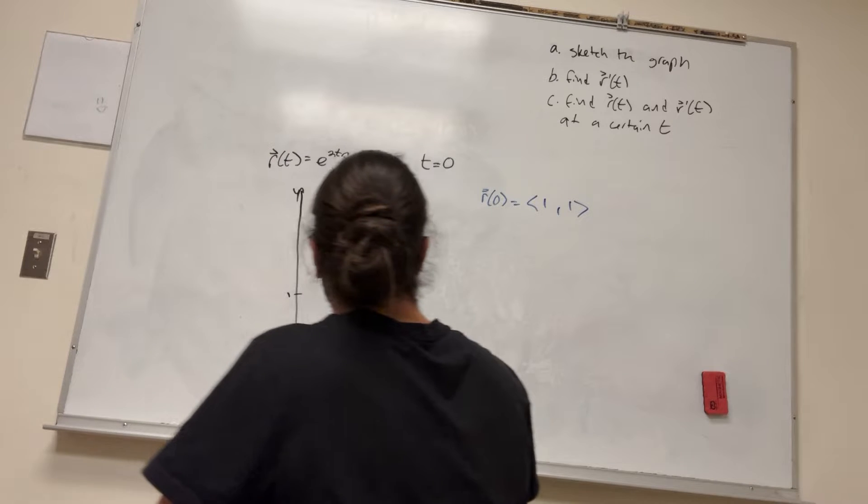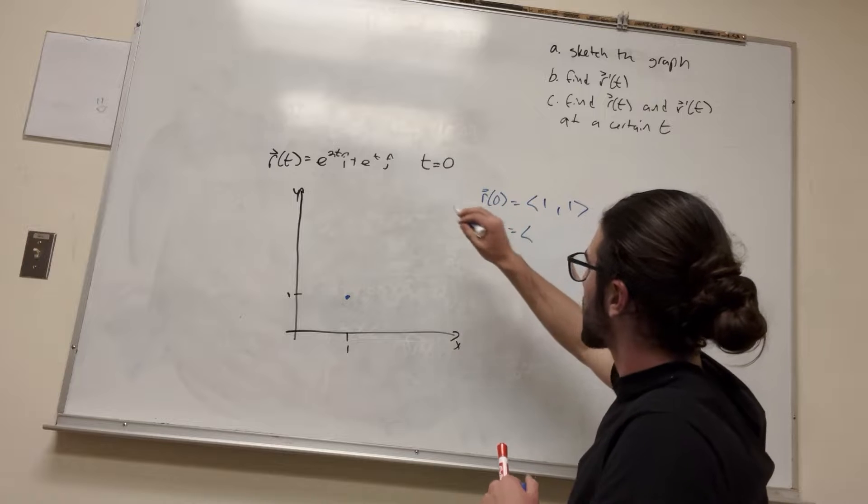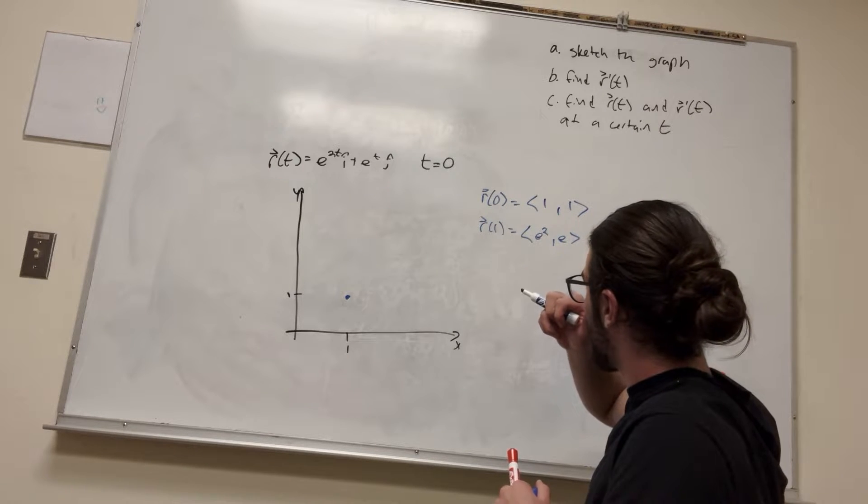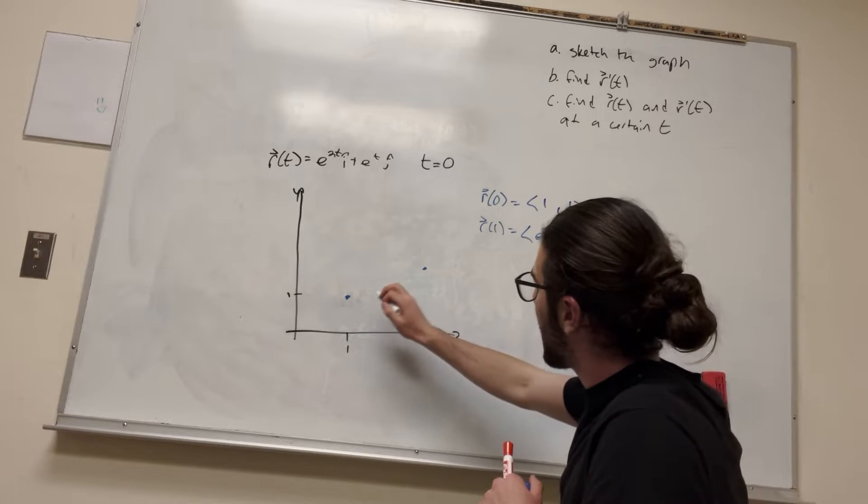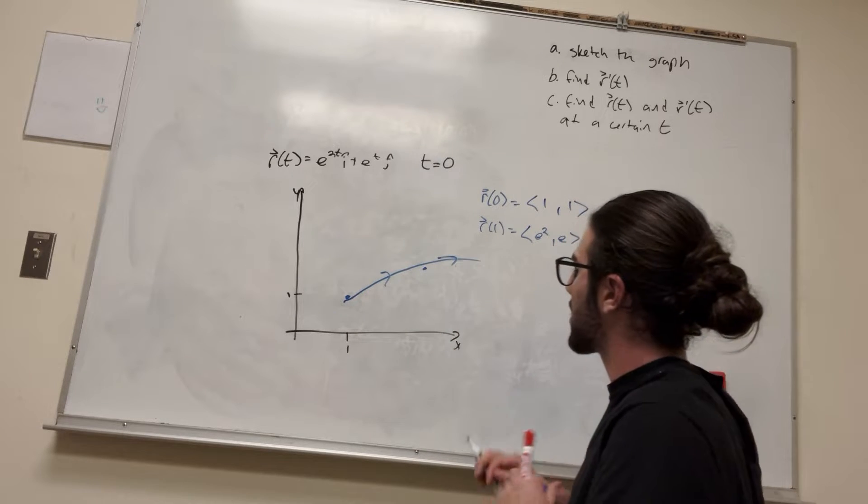Alright. So how about r of 1? Let's see what happens at r of 1. So it's going to be e to the 2, and then e. So this is going to go somewhere along like here, maybe. You can kind of tell this is going to shoot off in this direction.